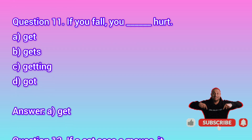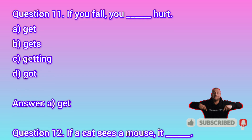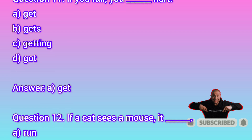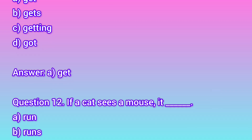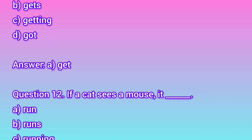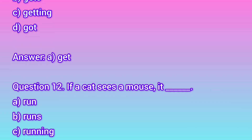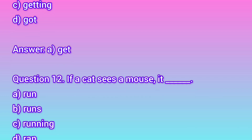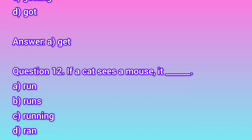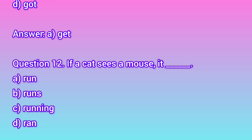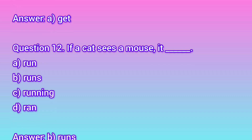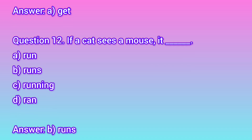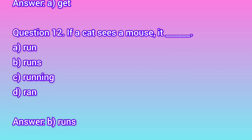Question 12. If a cat sees a mouse, it ___ . A. Run. B. Runs. C. Running. D. Ran. Answer B: Runs.